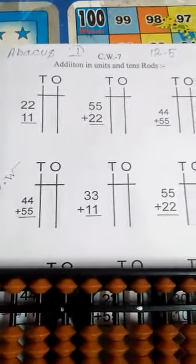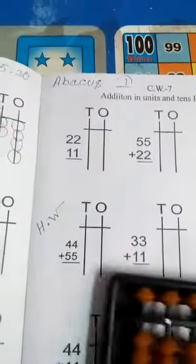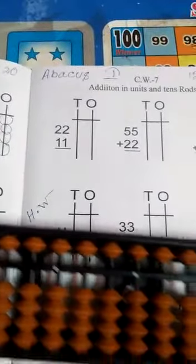Subject Abacus Class 1. Addition in units and tens rod. First, 22 add 11. O means 1, T means 10. 22.